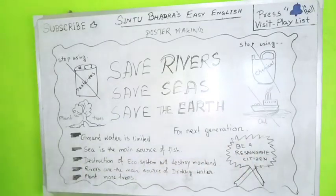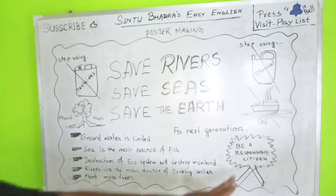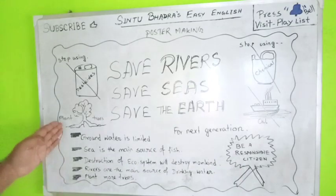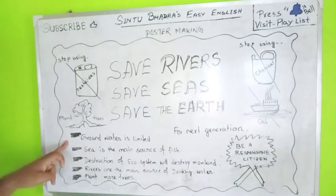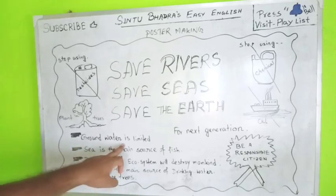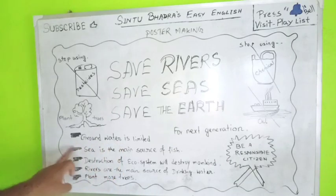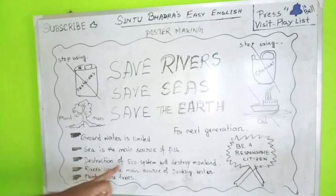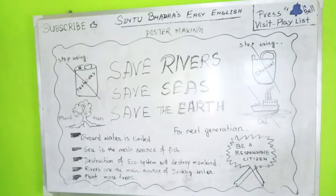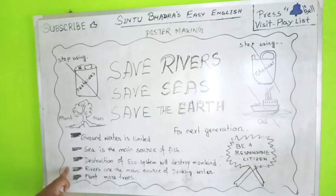Be a responsible citizen. Ground water is limited. The sea is the main source of fish. Destruction of the ecosystem will destroy mankind. The rivers and seas are damaged. Rivers are the main source of drinking water. Plant more trees.